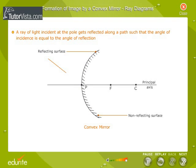A ray of light incident at the pole gets reflected along a path such that the angle of incidence is equal to the angle of reflection.